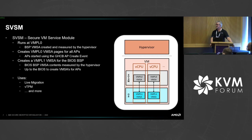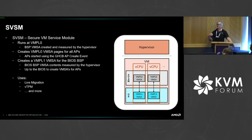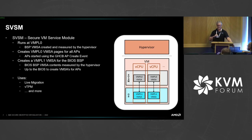That brings us to how we create an SVSM — a Secure VM Service Module. There's a specification I was hoping would be posted already on our developer site; it should be there very soon. It did go out on the SNP mailing list a while ago and we were asked to take ownership of it at AMD, so just working through all that and it will be posted shortly. The concept is that VMPL 0 is used for the SVSM. We will create the SVSM BSP at that level and then initiate the booting. That VMPL 0 VMSA is then used for all the APs that we want to start.